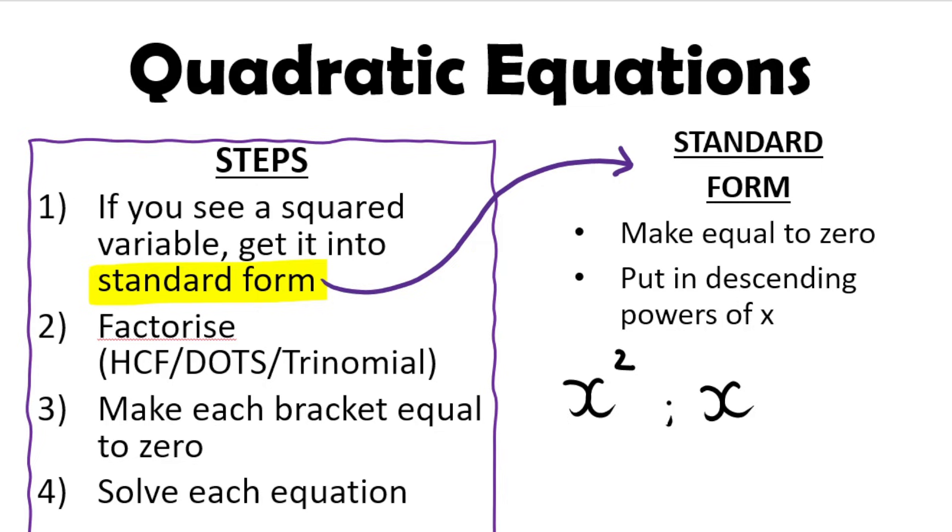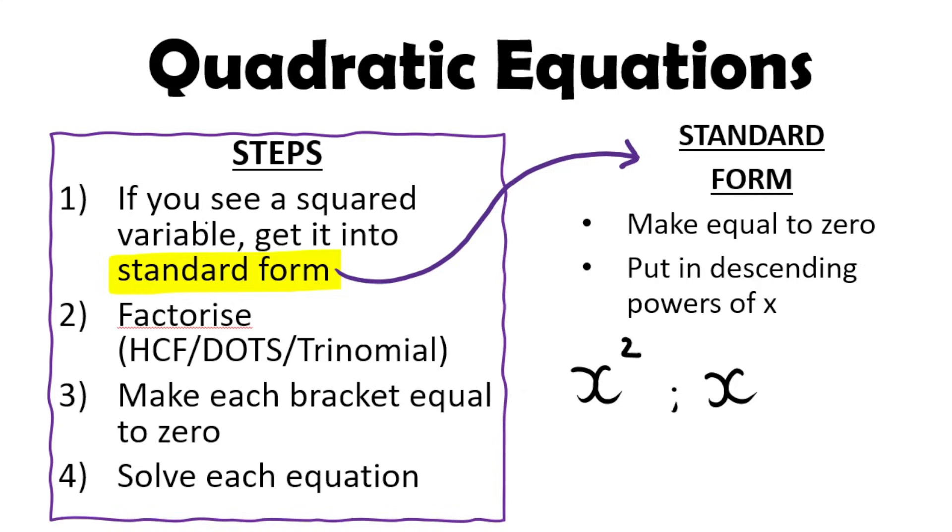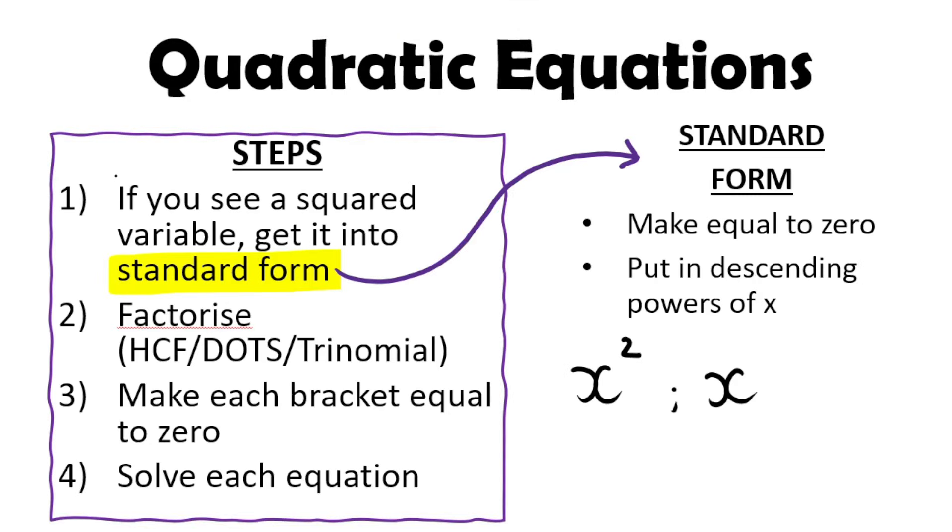So here's my first example. And as you can see, this is a quadratic equation. It says solve for x. We need to get our solutions, our answers. And we know it's quadratic because of the x squared. So you know, okay, I need to get this into standard form, which means it needs to equal zero, which it does. And descending powers of x, which it is. So step one is done.